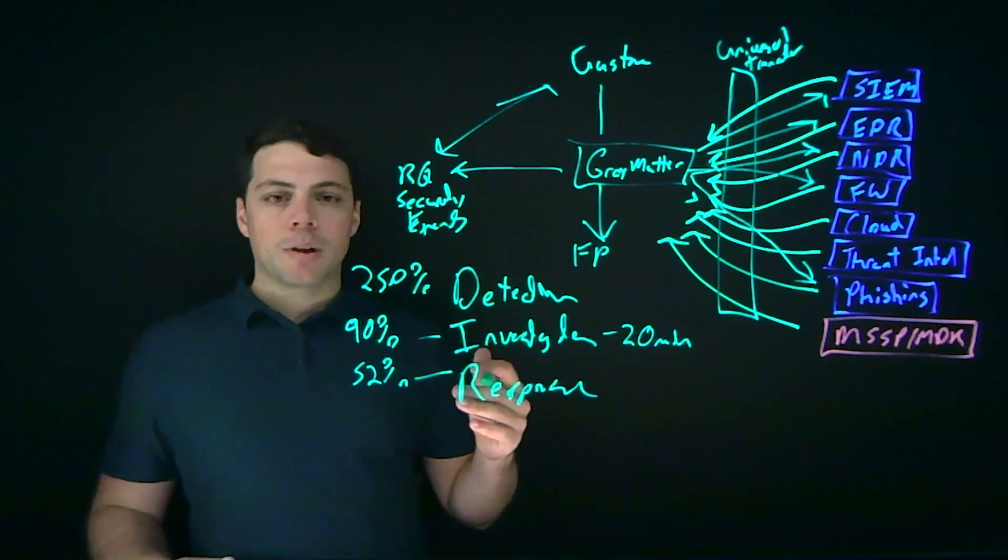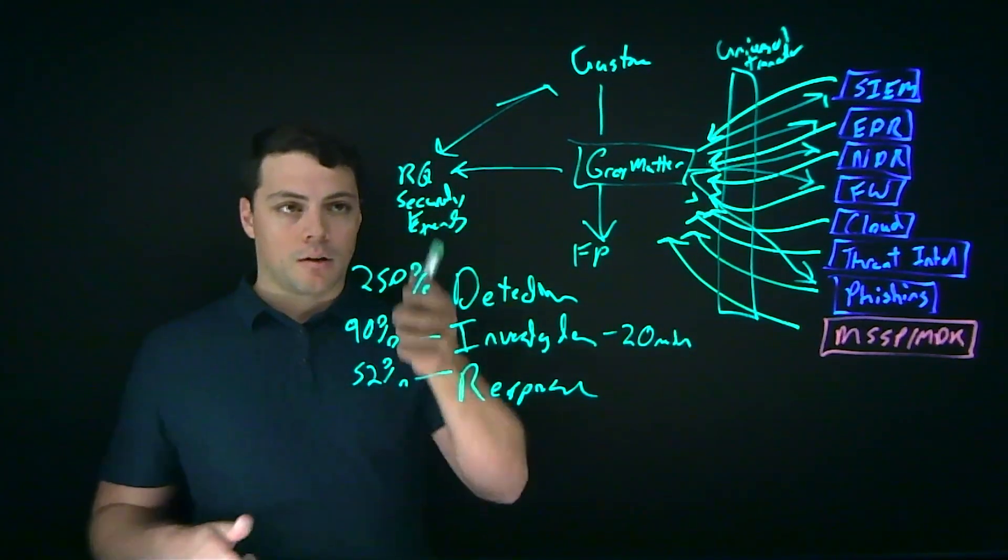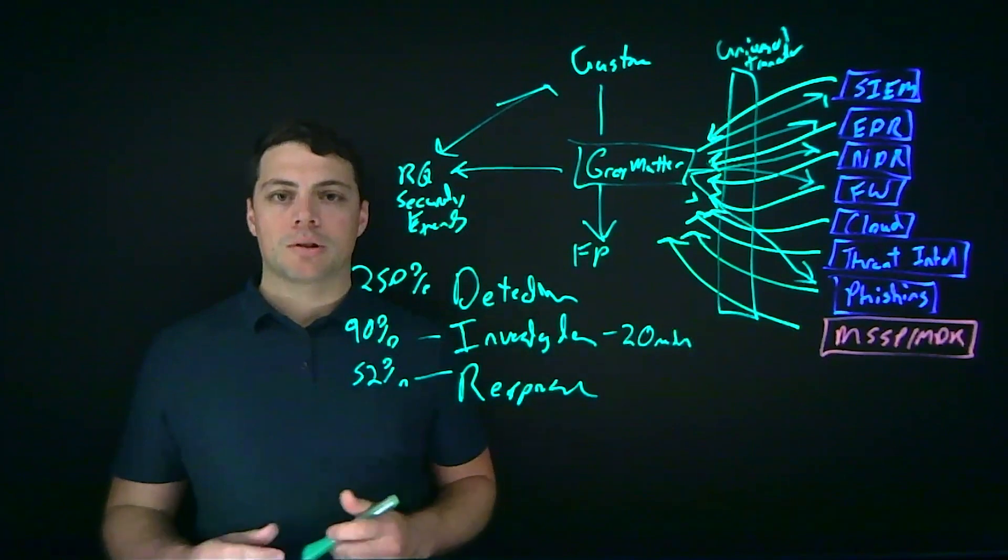So that's a little bit about ReliQuest. This is the problem that we're solving with our proprietary platform called Gray Matter, and our incredible security operations experts that are all around the world. If you have more questions, please feel free to reach out. Otherwise, have a great day.